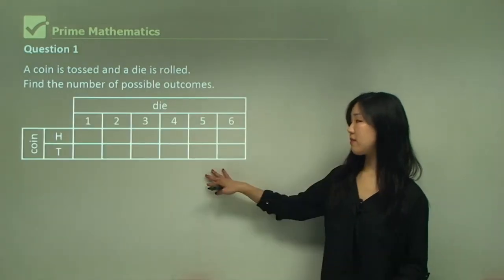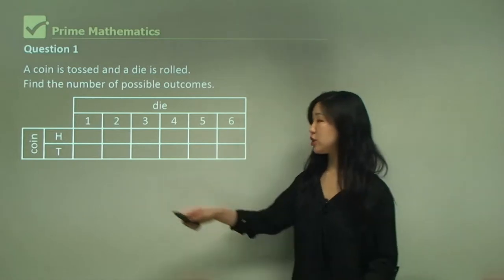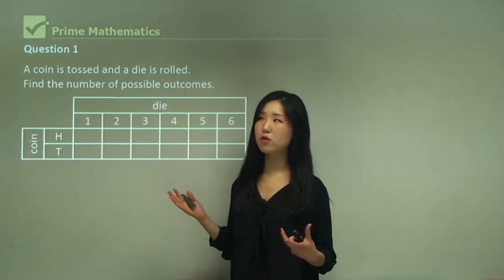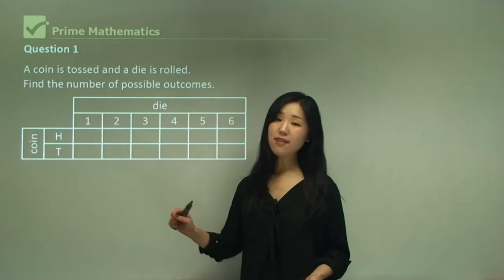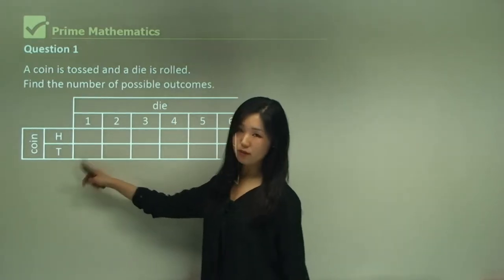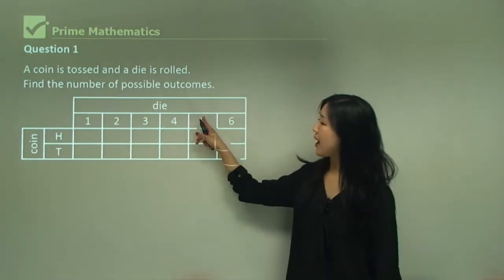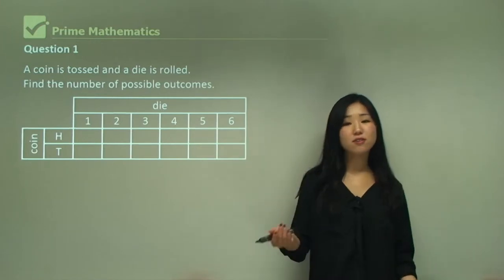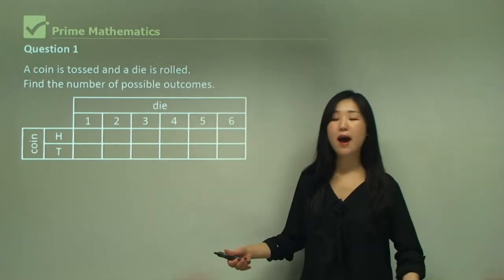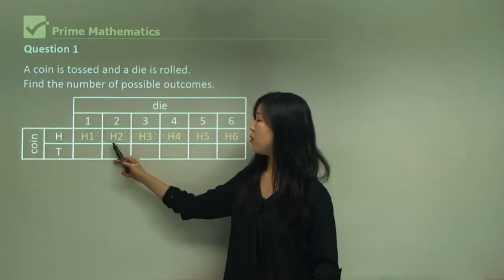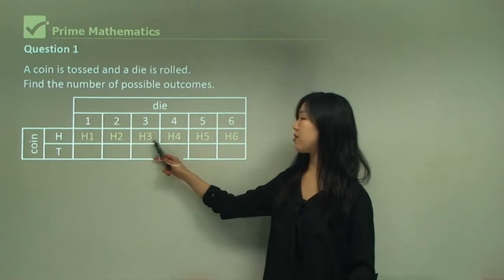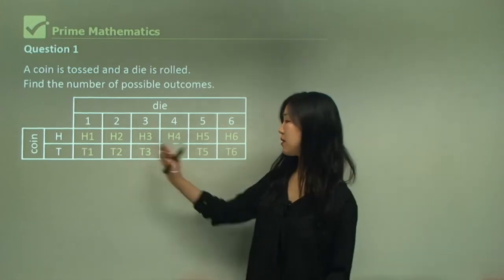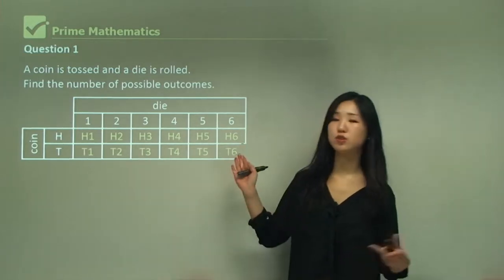I'm going to put up a little table here showing the possible outcomes a coin has — head and tail, just two. And for the die, it's six: one through six. So if I throw them together, I could get head-one, head-two, head-three, head-four, head-five, head-six, or if it was a tail, tail-one, tail-two, and so on.